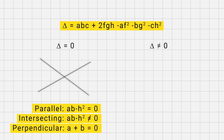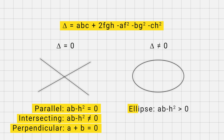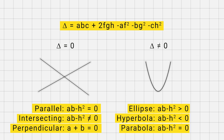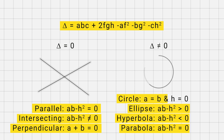If delta is not equal to 0, then ab minus h squared can be greater than 0, equal to 0, or less than 0. If ab minus h squared is greater than 0, the equation represents an ellipse. If ab minus h squared is less than 0, the equation represents a hyperbola. If ab minus h squared equal to 0, the equation represents a parabola. And if a equal to b and h equal to 0, then the equation represents a circle.